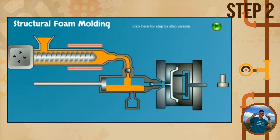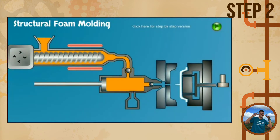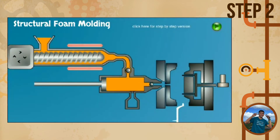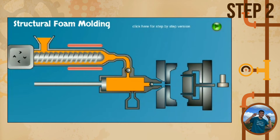Then, the melted plastic is transferred into the accumulator section, ready for the gas to be injected. Both ball valves prevent any escape at this stage.